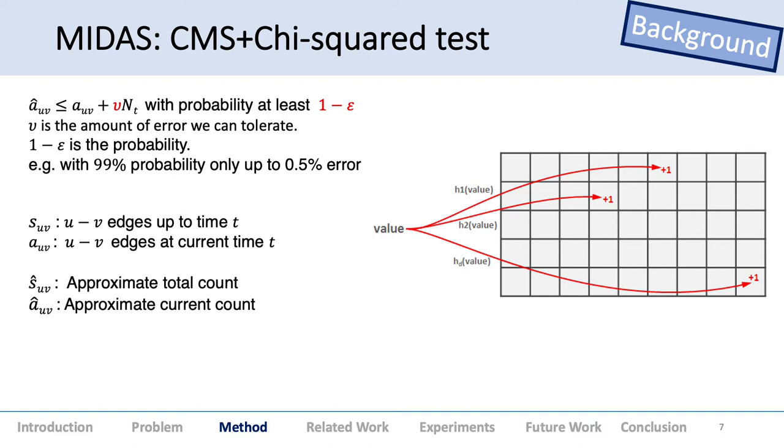MIDAS used two of these data structures, S and A. S is the total edges up to time t, and A is the current edges at time t. It retrieved these approximate counts of S and A. This is the final anomaly score for each edge in MIDAS—it had two-dimensional data. We extended it to a multidimensional setting.